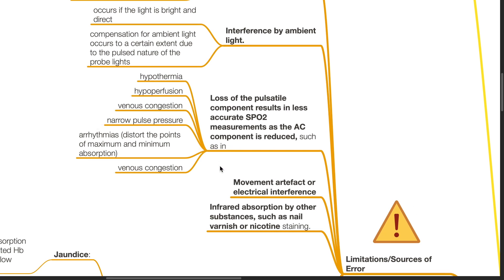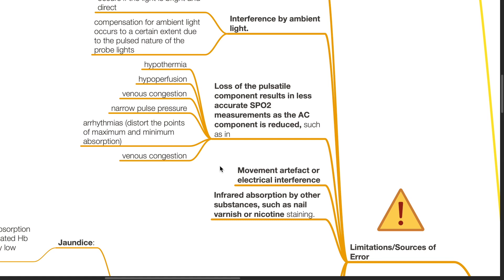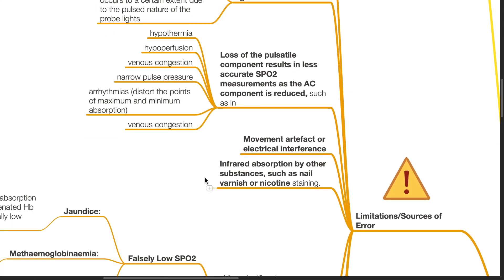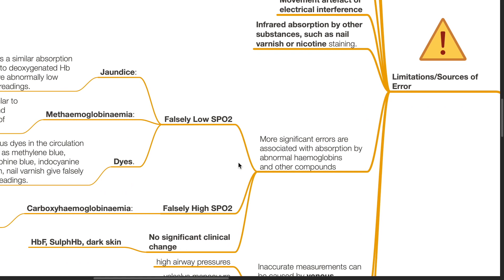Movement artifact or electrical interference can interfere with the accuracy of SpO2 measurements. Infrared absorption by other substances such as nail varnish or nicotine staining can affect the accuracy of SpO2. More significant errors are associated with absorption by abnormal hemoglobins and other compounds.